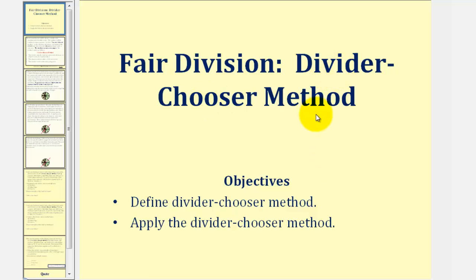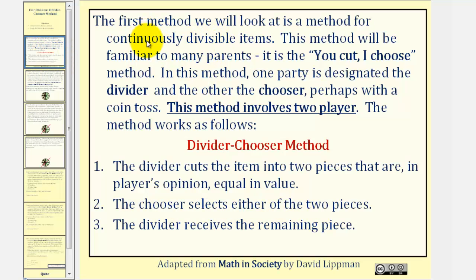Welcome to a lesson on the divider-chooser method of fair division. In this lesson we will define and apply the divider-chooser method. This is a method for continuously divisible items, and it will be familiar to many parents as the 'you cut, I choose' method. One party is designated the divider and the other the chooser, perhaps with a coin toss. This method only applies with two players.